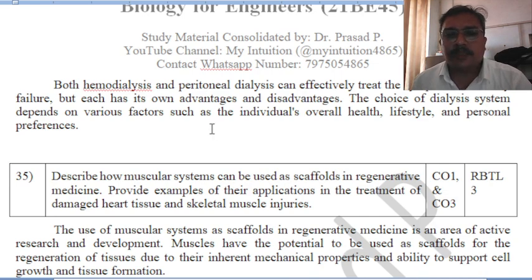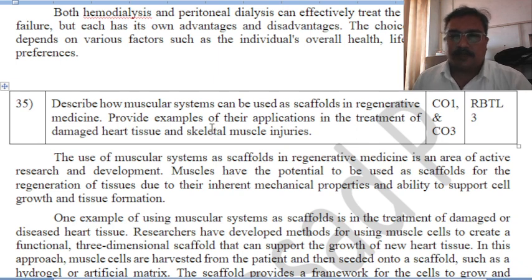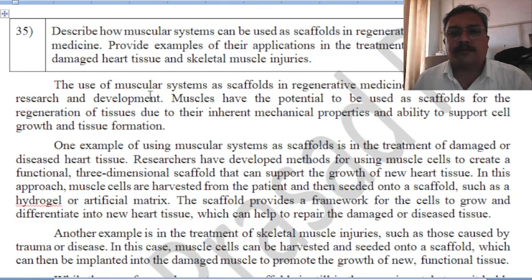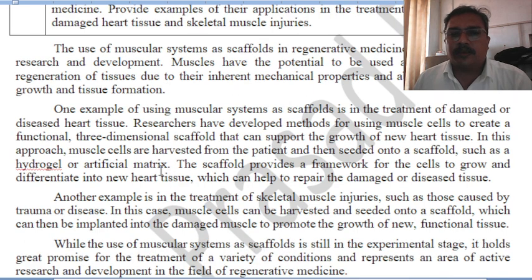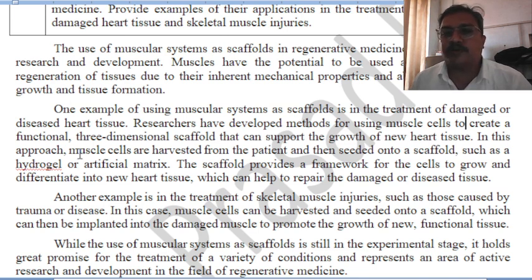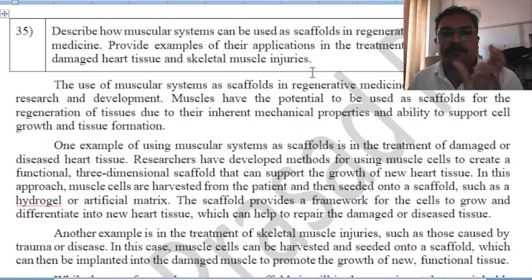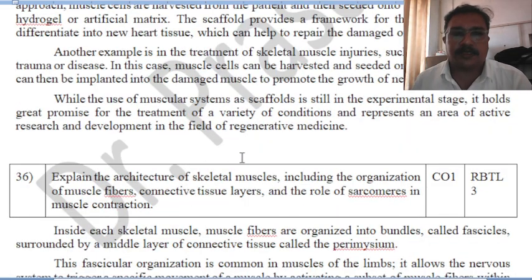Question 35: describe how the muscular system can be used as a scaffold — meaning a structural material — in regenerative medicine, and provide examples of applications in treatment of damaged heart tissues and skeletal muscle injuries. Researchers are developing functional three-dimensional scaffolds to support the growth of new heart tissues, since when heart damage occurs the supporting system must be given so that muscle tissues can grow naturally. A scaffold is a three-dimensional structure that is biocompatible and supports cell growth.